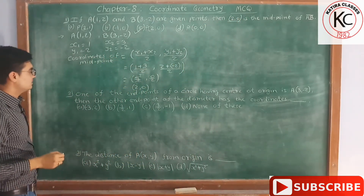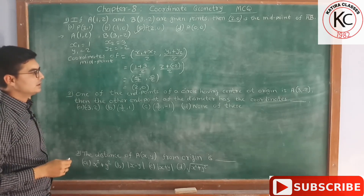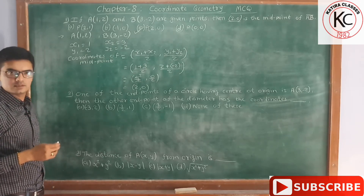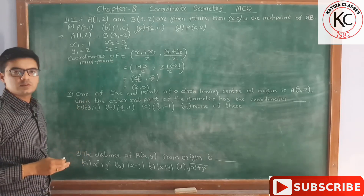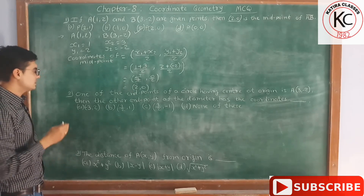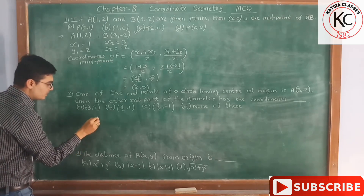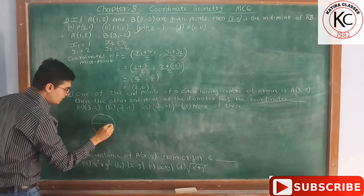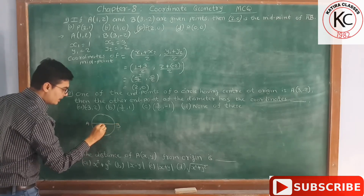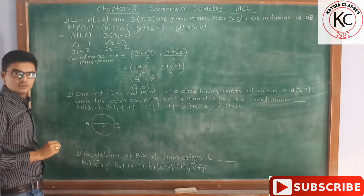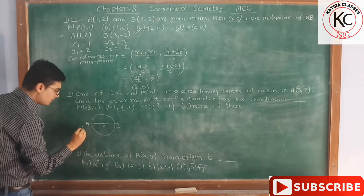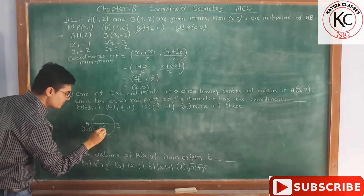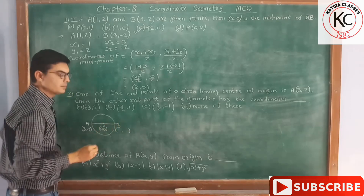Now the second MCQ: one of the endpoints of a circle having centre at the origin is A. Then the other endpoint of the diameter has the coordinates dash. This sum is also based on the midpoint formula, but we will do it directly. First of all, let's draw the figure of a circle. AB is the diameter and O is the origin. Coordinates of point A are given as (3, −2). Coordinates of the origin are always (0, 0) and we have to find coordinates of point B.